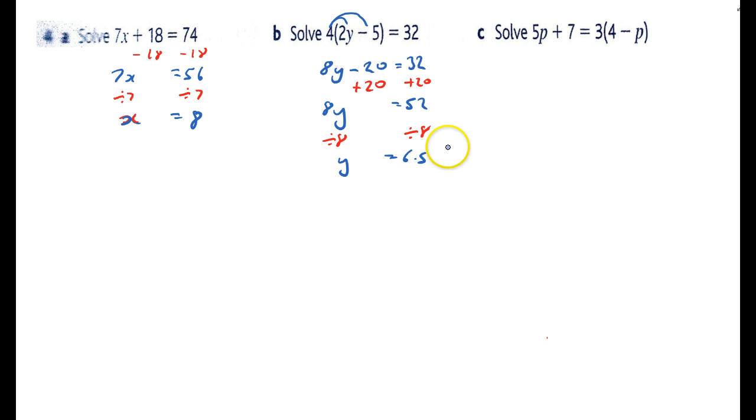I've got a bracket. I can't divide by 3 because 5 doesn't divide by 3 nicely, so I'm going to have to multiply out the brackets. The left hand side will remain 5p plus 7, and that will be 3 times 4 will be 12 minus 3p.